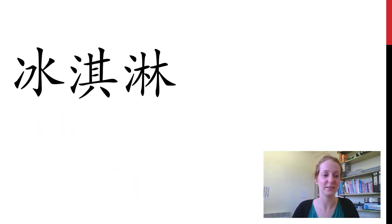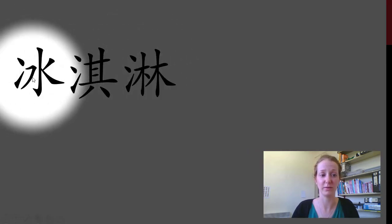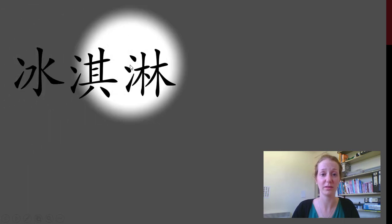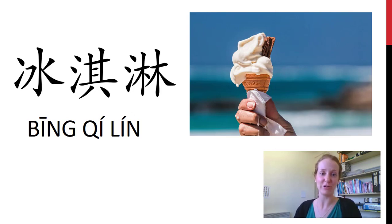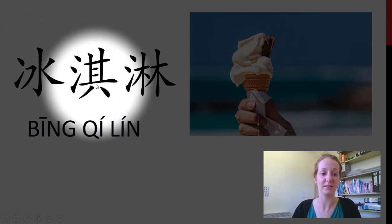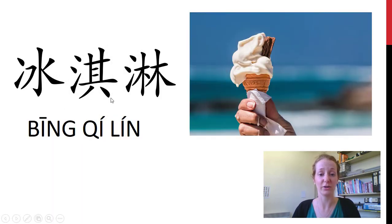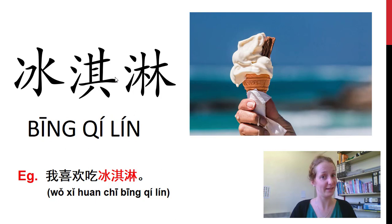And our last one. We have lots of water radicals and an ice radical. What do you think this is? 冰淇淋 — ice cream. This is based on the English transliteration as well. We've got 冰 which means ice, and 淇淋 which sounds like cream. 我喜欢吃冰淇淋. 你呢?